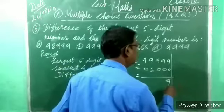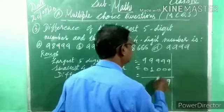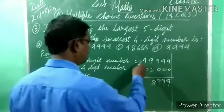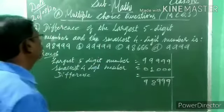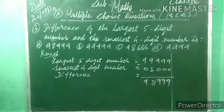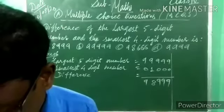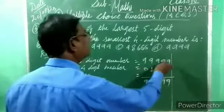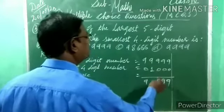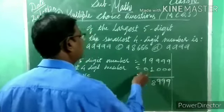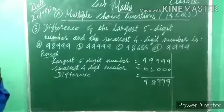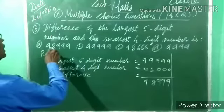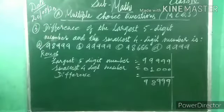Nine minus zero is nine; nine minus zero is nine; nine minus zero is nine; nine minus one is eight; nine minus zero is nine. So the answer is ninety-eight thousand nine hundred ninety-nine (98,999). Option A. Put right for option A.